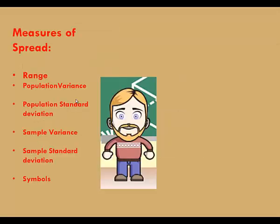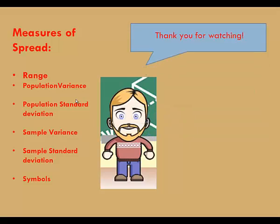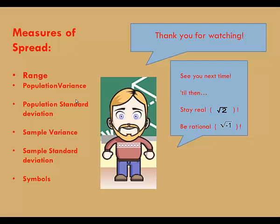In this video, we discussed measures of spread, including range, variance, and standard deviation. The formulas for population variance and population standard deviation differ from the formulas for sample variance and sample standard deviation — remember that in the sample versions, the denominator is n minus 1. We also discussed the symbols sigma squared, sigma, s squared, and s. Thanks for watching and have a great day. Until next time, stay real and be rational.